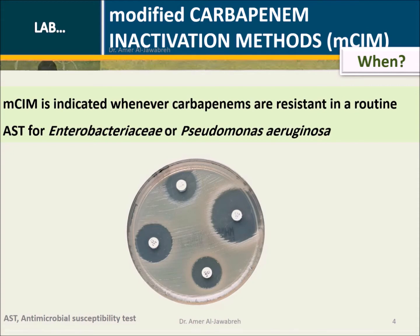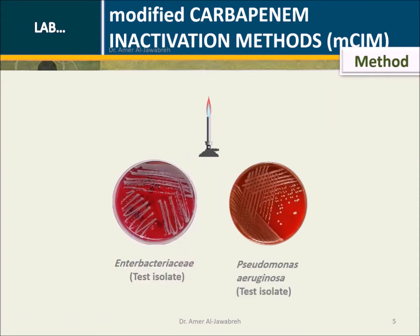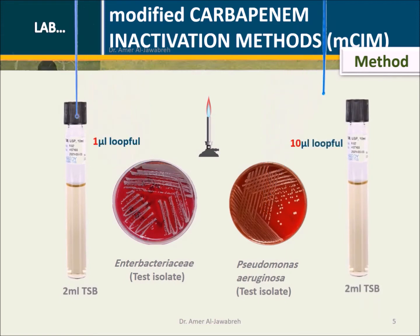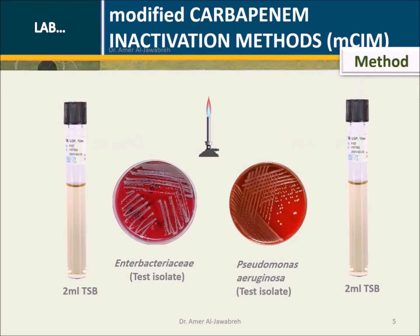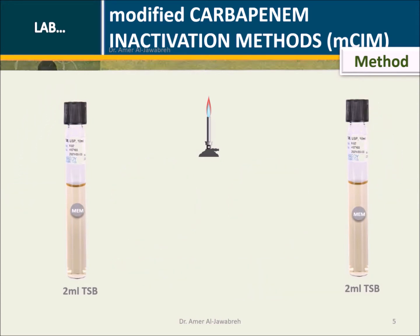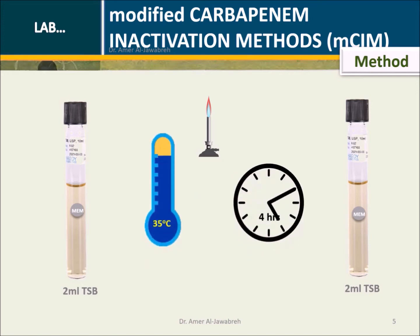Method: Emulsify a 1 microliter loop full of Enterobacteriaceae in 2 mL TSB broth, and 10 microliters of Pseudomonas in another 2 mL TSB broth. Add a 10 microgram meropenem disk to each TSB tube and immerse well. Incubate at 35 degrees Celsius for 4 hours.